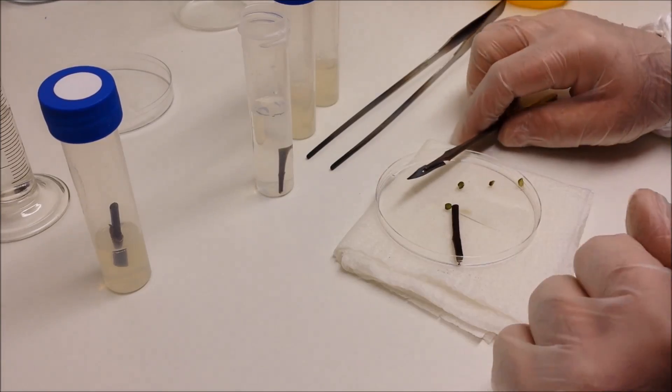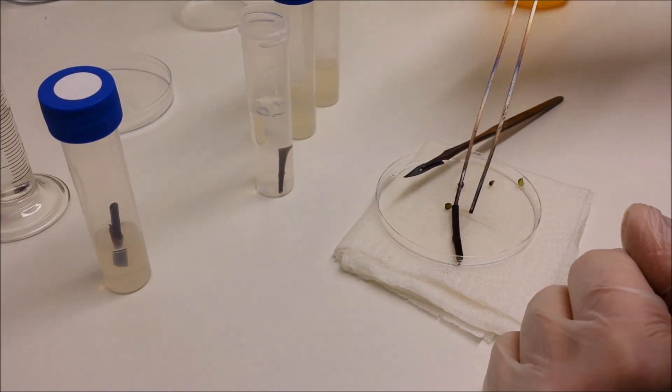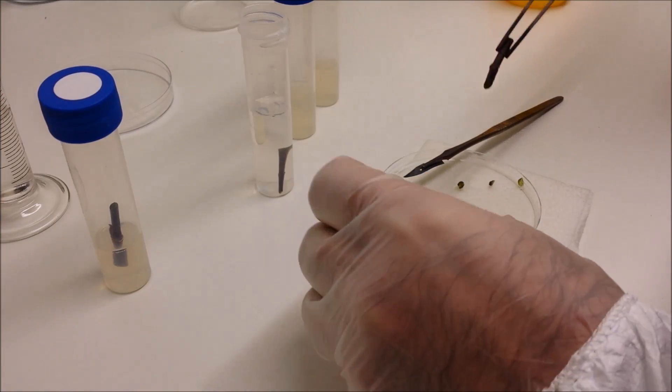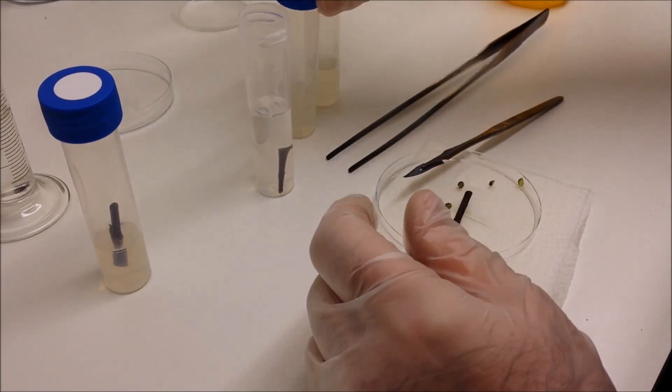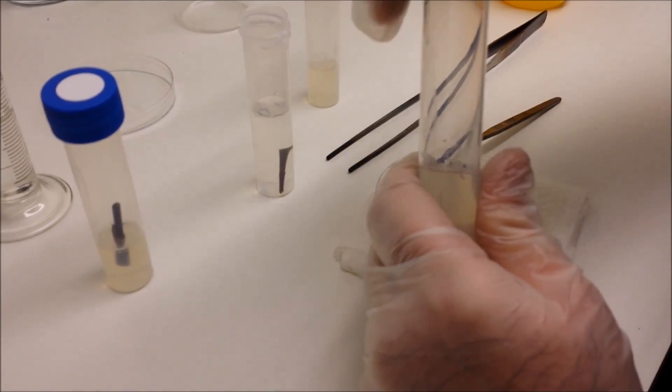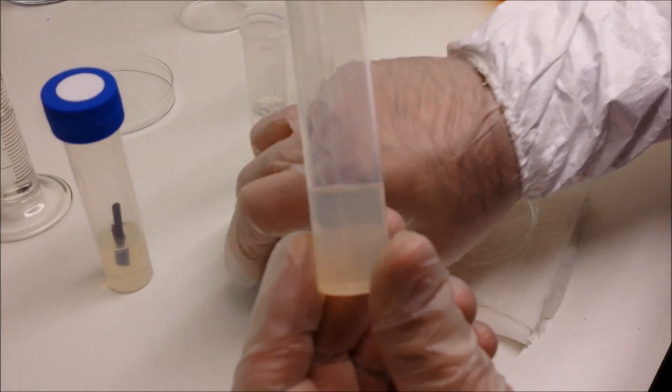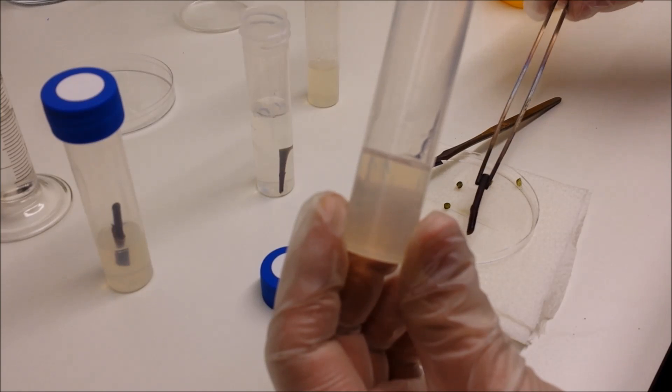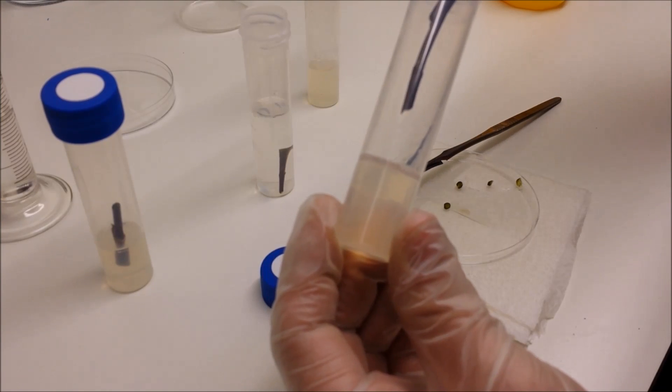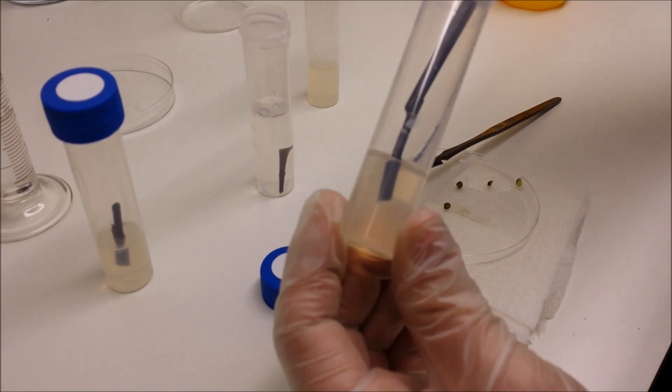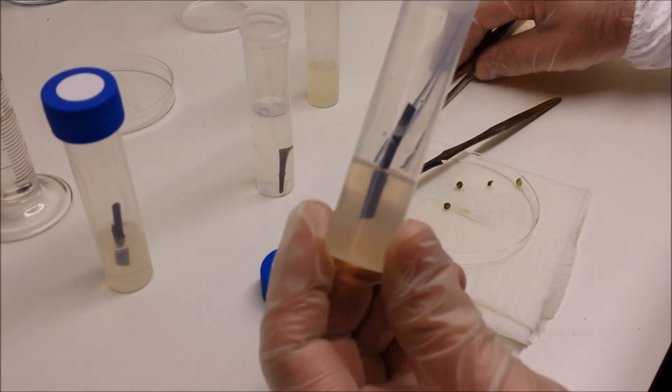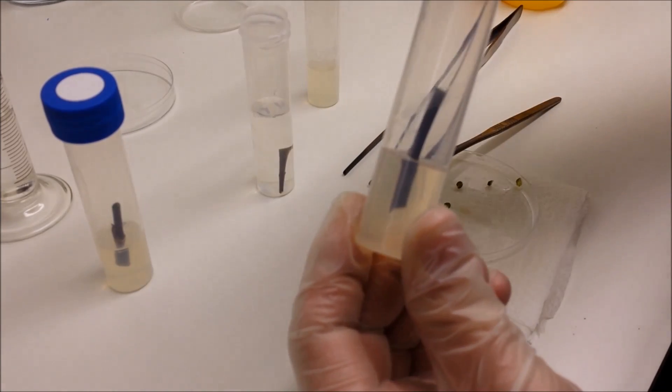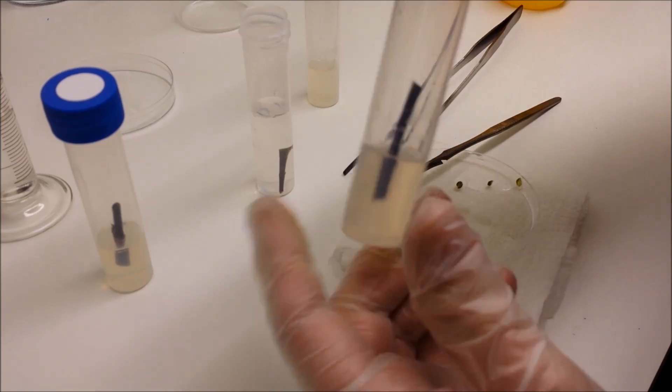Again, pointed end down. Place the lid onto the sterilized surface. Try not, if possible, try not to touch the insides of the glass or plastic tube with anything. Keeps it as sterilized as possible. That's the second one done.